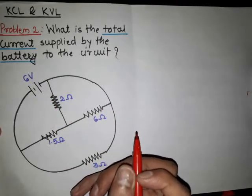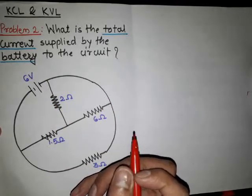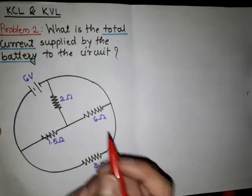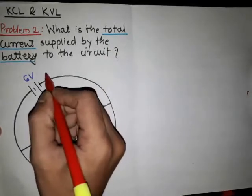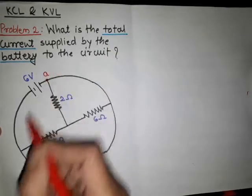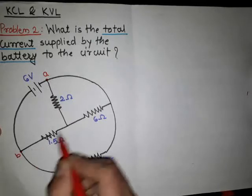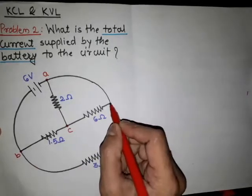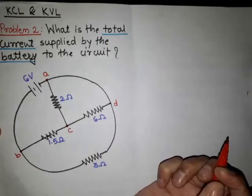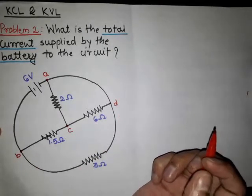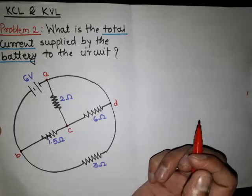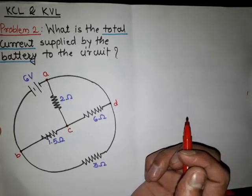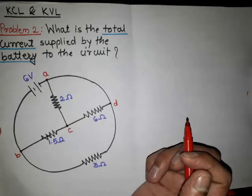Firstly, we are considering the different nodes in the circuit. Suppose this node is A, this is B, C, and D. In KCL and KVL, we are simply considering the branch currents. So here we are considering the different branch currents.